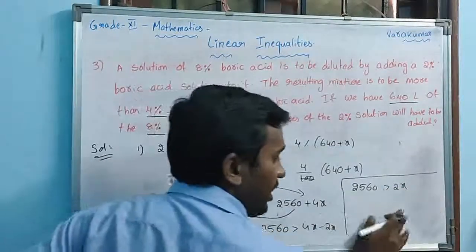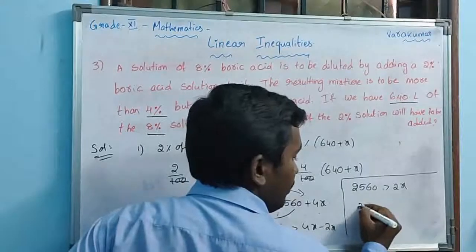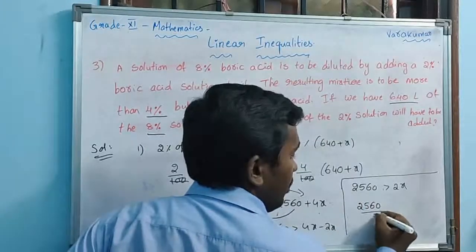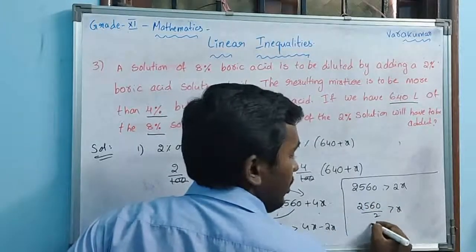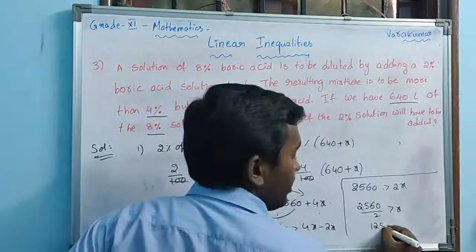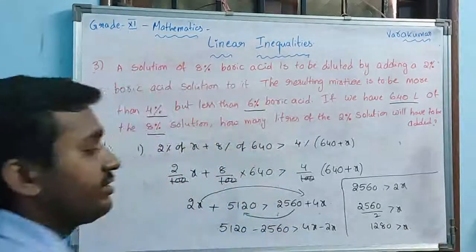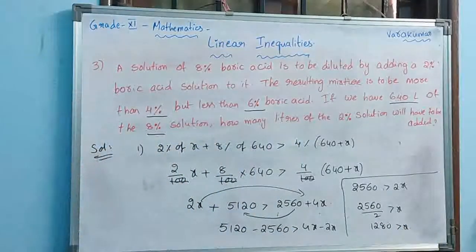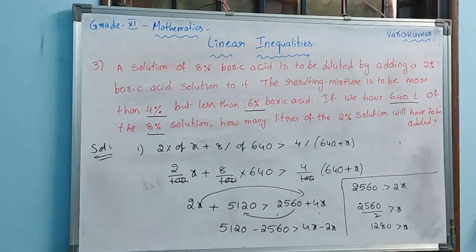Dividing both sides by 2: 2560 divided by 2 is greater than x, so 1280 is greater than x — that is, x less than 1280. That is our first result. Let us now do the second condition.